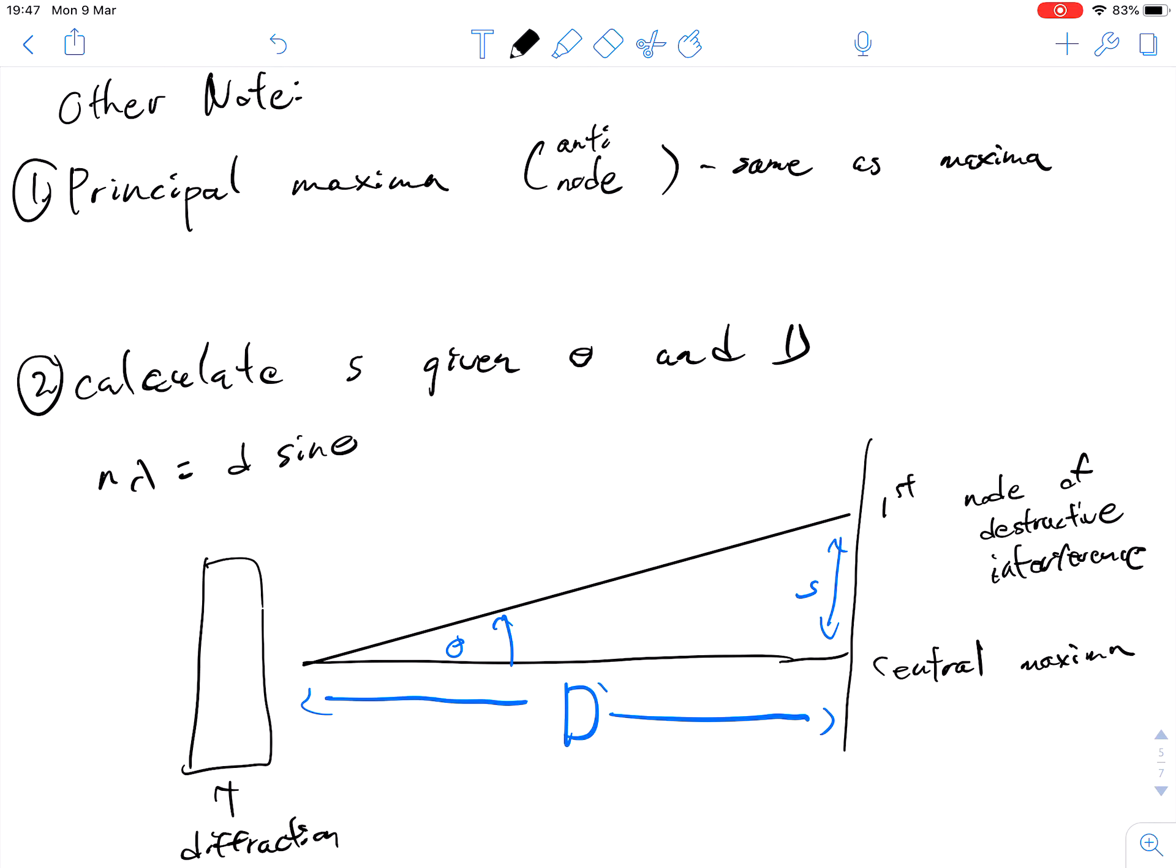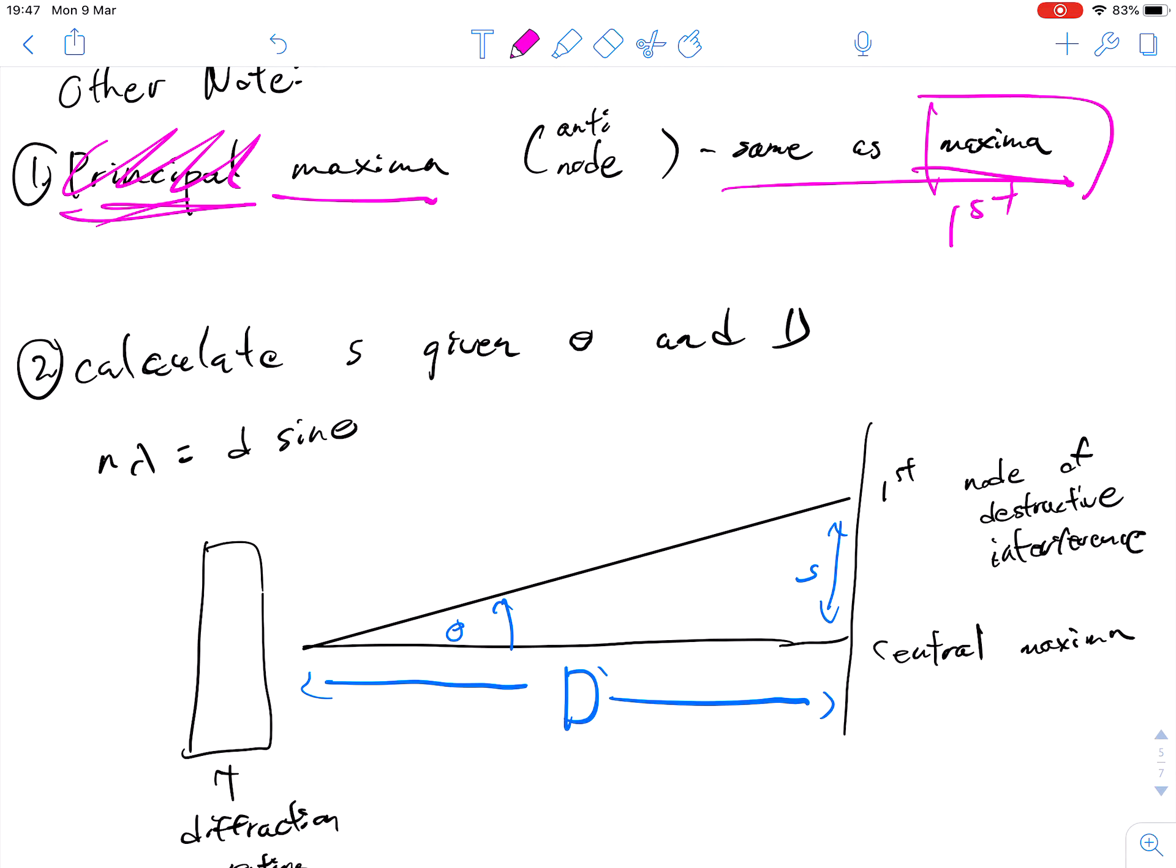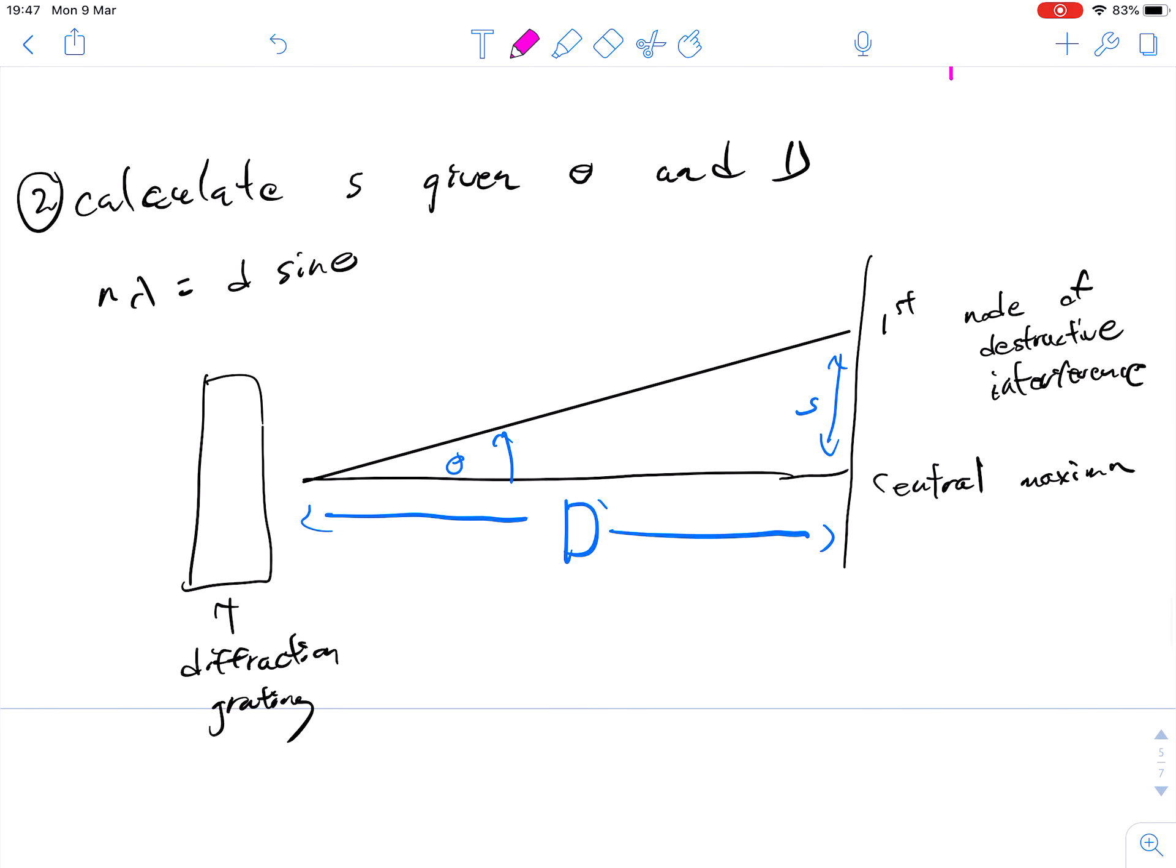Something I didn't mention is that sometimes the textbook or Cognitie likes to use principle maxima. It's an extra fancy word. You can really do without it - it means the same thing. It's referring to the first order maxima, or the second order or the fourth order maxima. Just ignore the word principle.